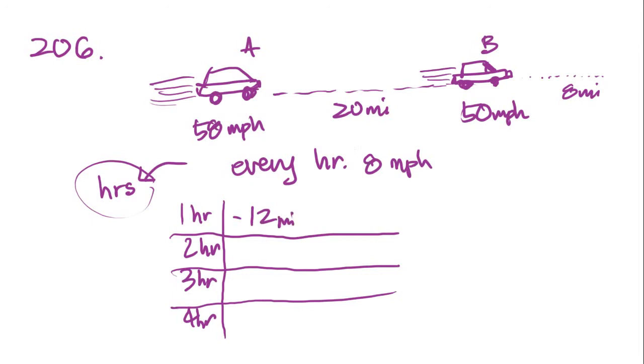What happens in the third hour? Well, there's only 4 miles to go before A is even with B. And we know that every hour, it catches up by 8 miles per hour. So that means halfway through the hour, A has completely caught up with B. And then for the second half of the hour, A actually goes beyond B by 4 miles. So by the end of the third hour, A is ahead of B by 4 miles.